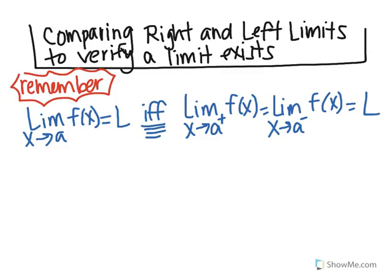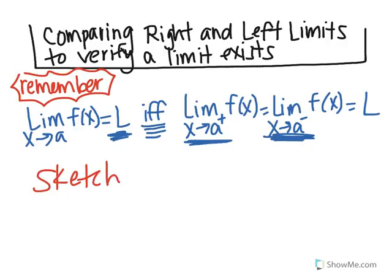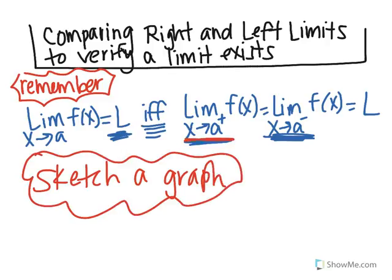The last part reviews concepts from today's lesson. The limit of f of x as x approaches a exists if and only if the limit from the right equals the limit from the left. Algebraically, you're going to prove whether the limit exists by looking at the graph — sketching a graph and comparing it from the right and from the left. If they're the same, the limit exists; if they're not, it doesn't.